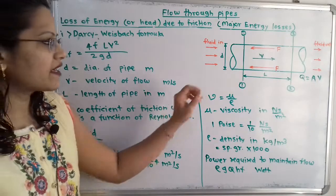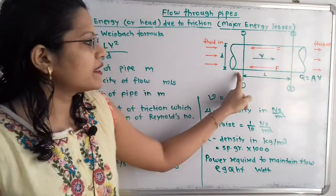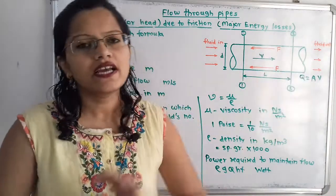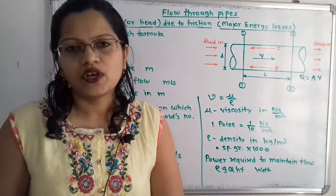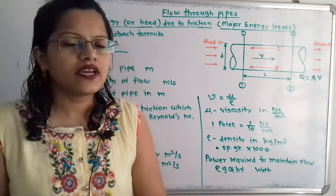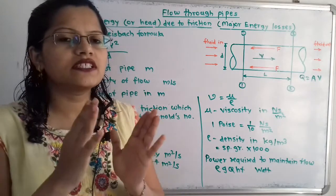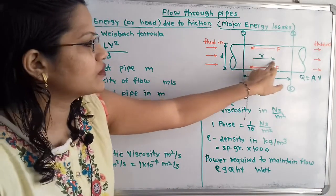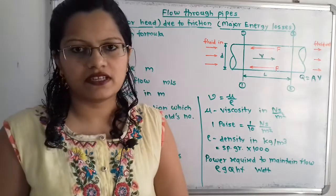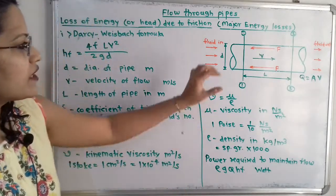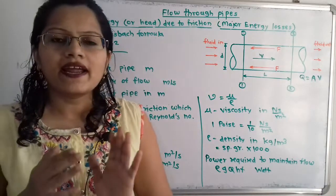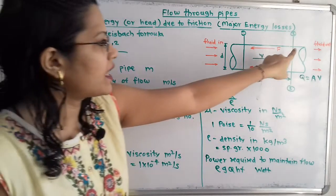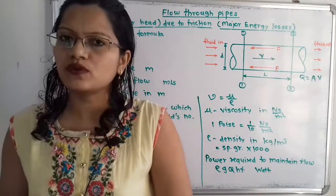If we observe the diagram, here is the pipe in which the fluid is flowing from the left-hand side towards the right-hand side. The direction of velocity is in the same direction as the fluid flow — towards the right-hand side. Here is the diameter D of the pipe. At the inlet we consider section 1-1, and at the outlet we consider section 2-2.